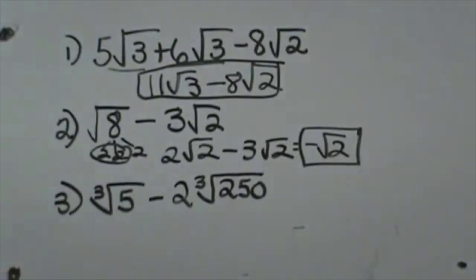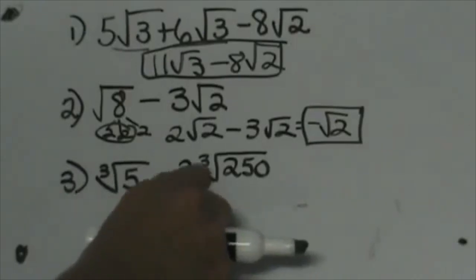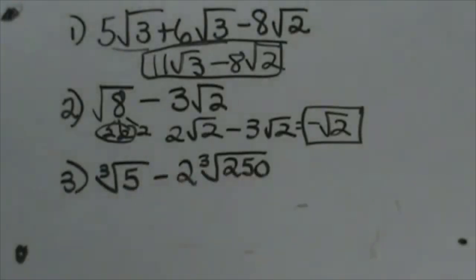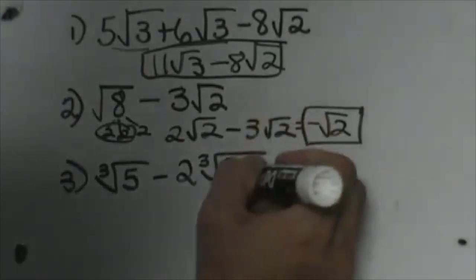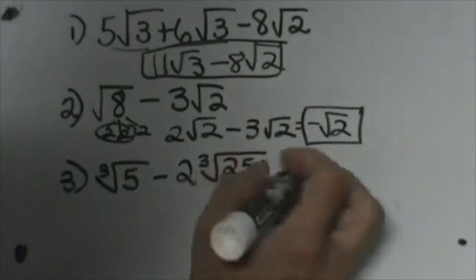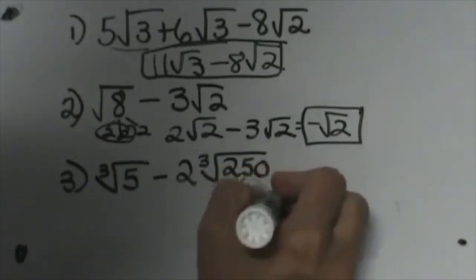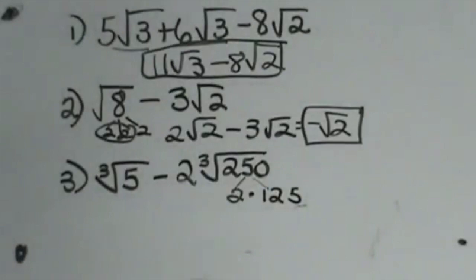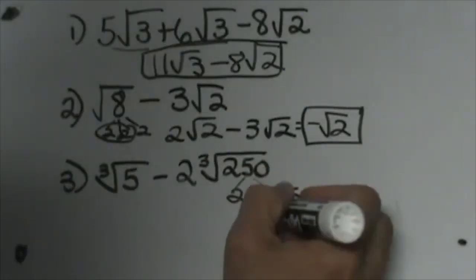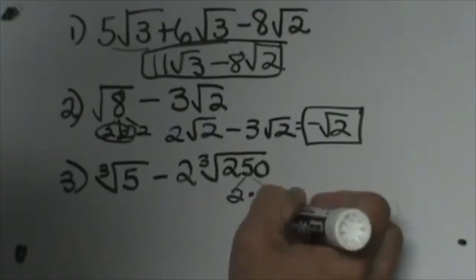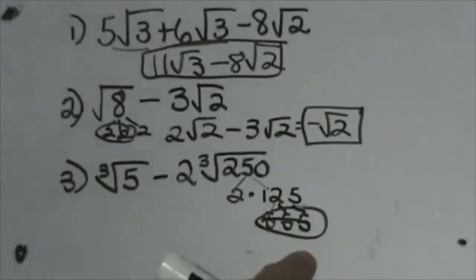This time with a cube root. We have ∛5 - 2∛250. 250 is pretty big. How do we break that down? It's an even number, so let's do 2 times 125. 125 is a perfect cube—it's 5 times 5 times 5.